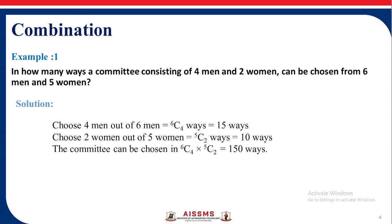Now the 4 men can be chosen out of 6 men in 6C4 ways, so that the 15 ways come out of it. Now we need to choose 2 women out of 5 women, that is 5C2 ways is 10 ways. So the committee can be chosen in 6C4 into 5C2, that is 150 ways.